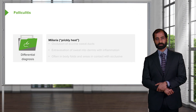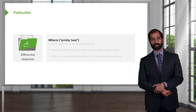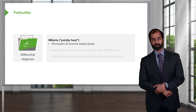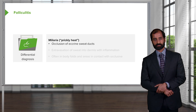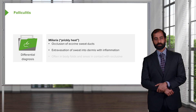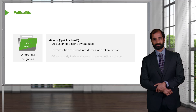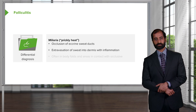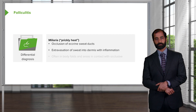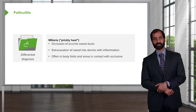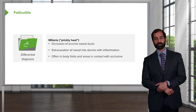Another differential diagnosis is miliaria, also known as prickly heat. With miliaria, there is occlusion of the eccrine sweat duct and extravasation of sweat into the dermis with inflammation. The body areas affected are typically those in contact with the occlusion.